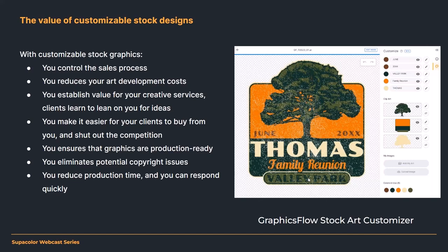Production readiness is another benefit of stock designs — when you pick a design from a stock design, it's already ready for production, color-separated for screen printing, set up in layers so you can easily change colors for a transfer. It eliminates copyright issues and reduces production time so you can respond very quickly. If a state championship baseball team wins unexpectedly, you can bust out a graphic real quick based on a stock design. I helped a client do that — by the time I called to see if she got the artwork, she said, 'I'm already printing.'